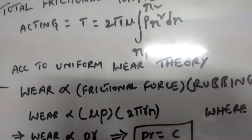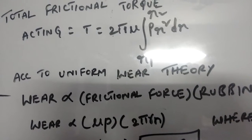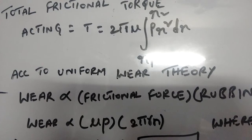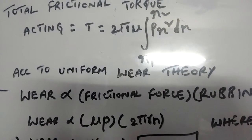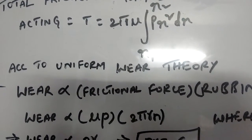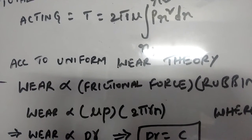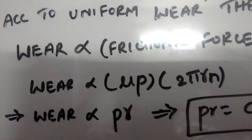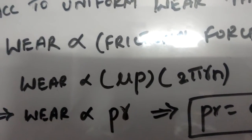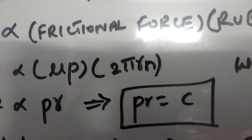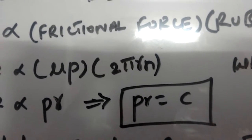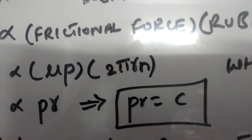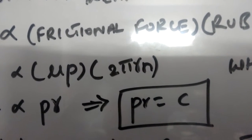When gradual wearing takes place, the pressure is not uniformly distributed, and the wear is directly proportional to frictional force and rubbing velocity. Frictional force equals mu times p, where p is the intensity of pressure, multiplied by rubbing velocity, which is 2π·r·n, where n is the speed of the friction plate. From this, wear is directly proportional to p times r, so the product of intensity of pressure and radius of the elemental ring is constant.